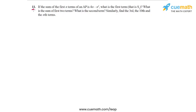In question 11 of the exercise, here's what the problem statement says: if the sum of the first n terms of an AP is 4n minus n squared, what is the first term — that is S1? What is the sum of the first two terms? Then what is the second term? Similarly, find the third, the tenth, and the nth terms.